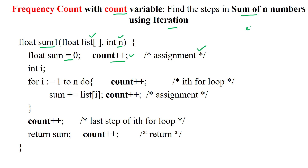Inside the global class, that is the parent class, we are declaring the count variable as integer and assigning it with 0. So this is the global variable. Then we are using that global variable to increment by 1 for the assignment operation.